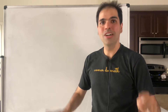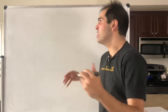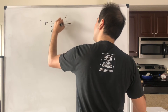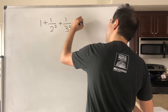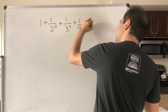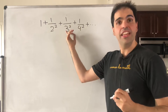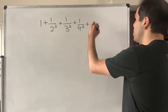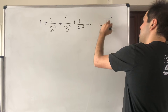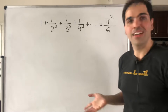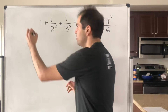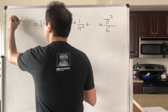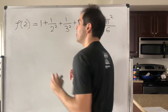So, part two: consider the following weird sum — one plus one over two squared, plus one over three squared, plus one over four squared, dot dot dot. I have done a separate video on this, and it turns out the sum is pi squared over six, using what's called Parseval's theorem. And this, by the way, is what's called zeta of two — the sum of reciprocals of squares.